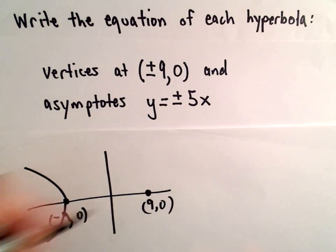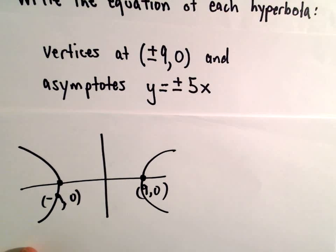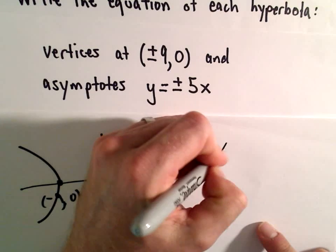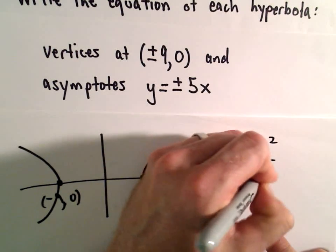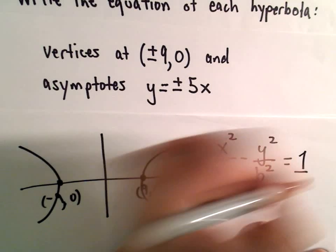Okay, so I know it's going to be opening to the left and to the right. So already based on that, I know that I'm going to use the equation x squared over a squared minus y squared over b squared equals 1.